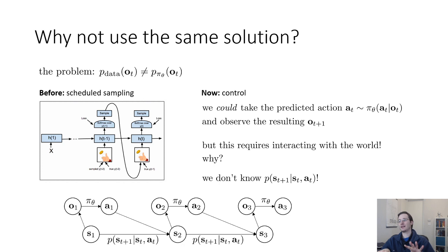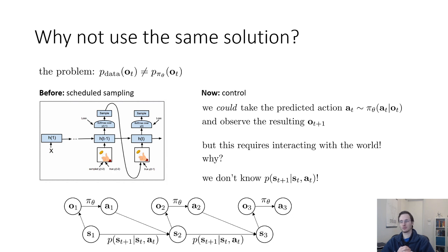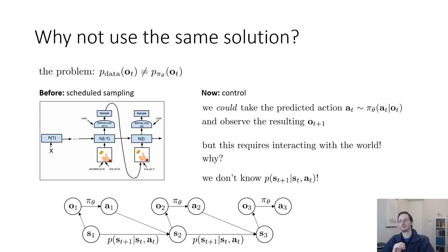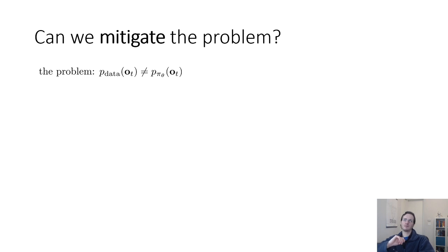There are algorithms that attempt to learn these probabilities — called model-based reinforcement learning algorithms — and that's one way to overcome the problem. But for imitation learning, we want to keep it simple: just train networks to map images to driving commands without learning other components. So could we instead just somehow mitigate the problem?